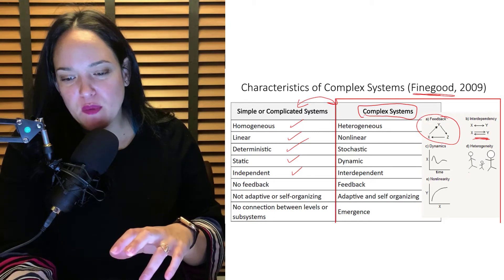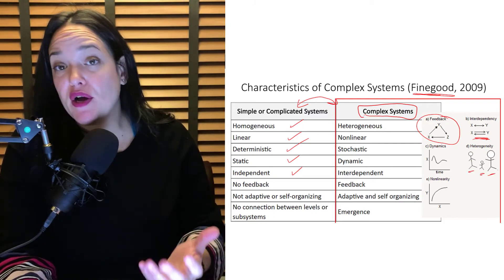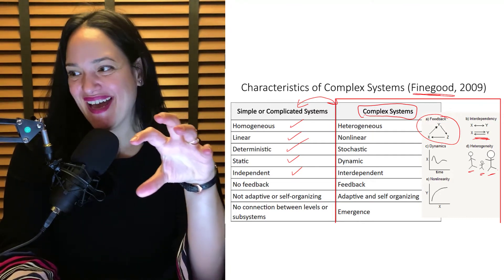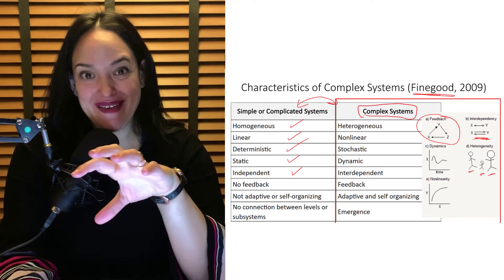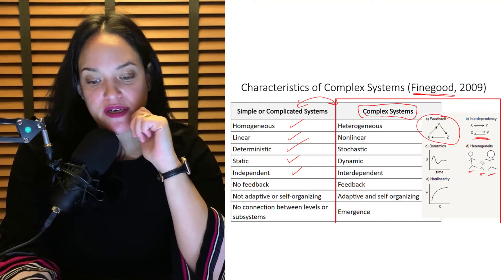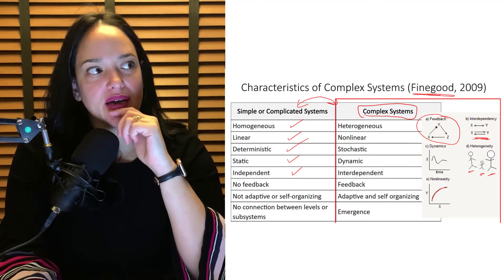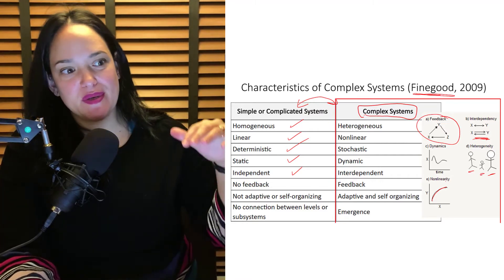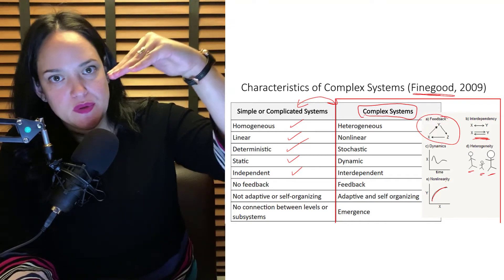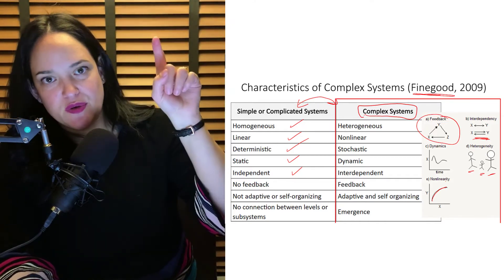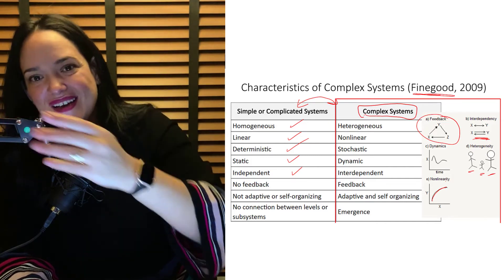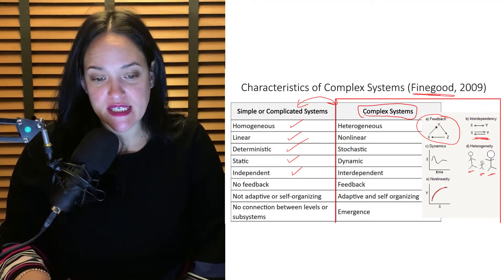Heterogeneity means everyone is a bit different and will respond to interventions differently — put two people on the exact same fitness training regimen and their bodies will adapt in a different way. And non-linearity means it changes over time in a non-linear fashion. People on a weight loss diet with caloric restriction don't typically lose weight in a straight line — there's typically a non-linear response where it might go down and then flatten out. That's an example of the non-linearity of this system.